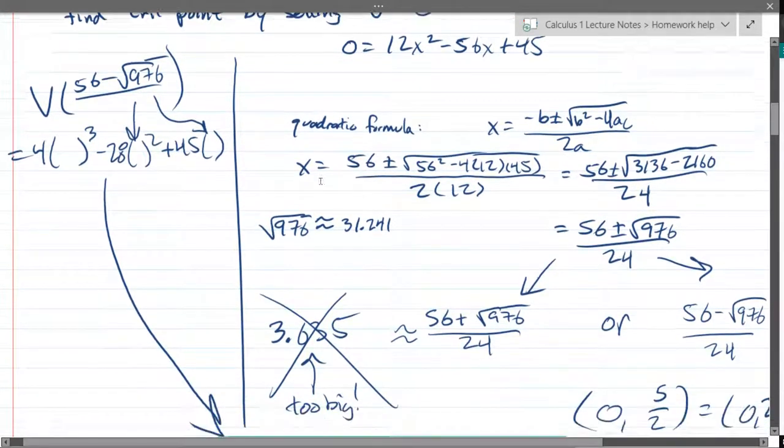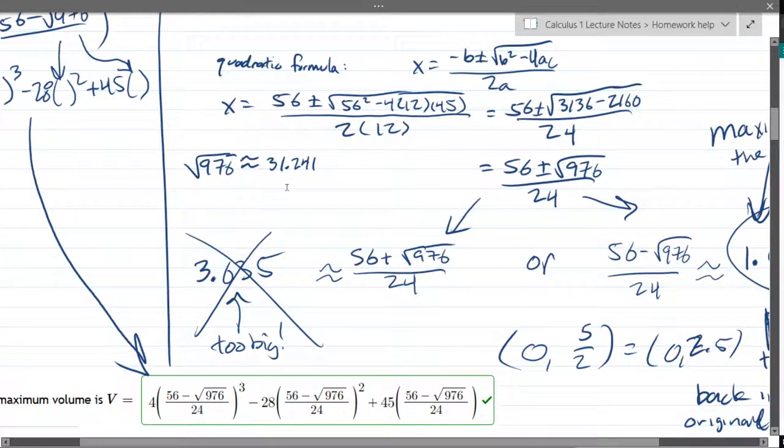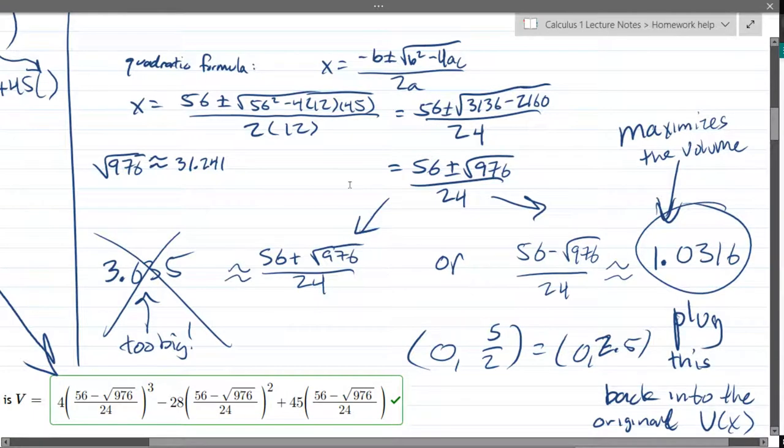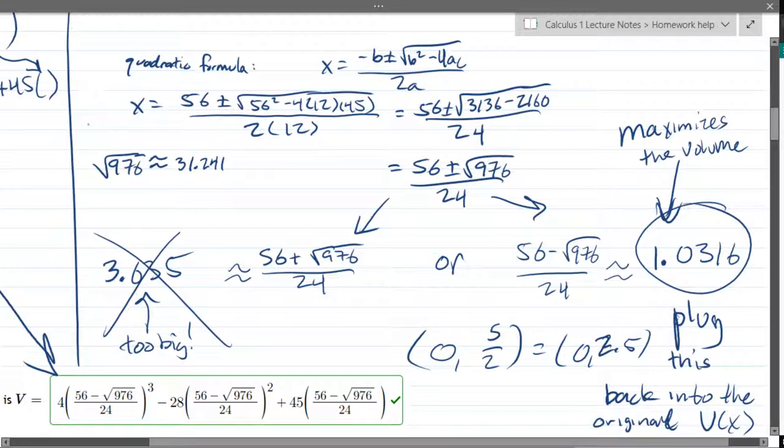And I went with the quadratic formula and got two answers that were not so pretty right here. And now the question is, which one do you choose? So what I did is I turned them into decimals. Now if one of these two was negative, I would immediately throw that one away. Neither of these turned out to be negative. I needed to use a calculator for that, so I just estimated the square root of 976 was about 31.